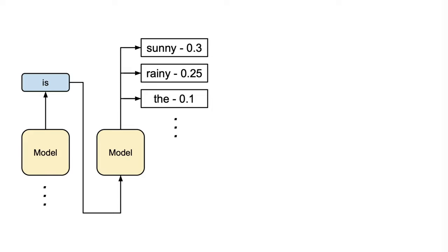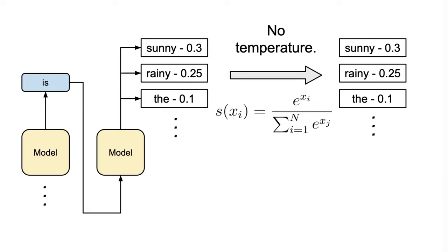Taking the previous sentence, 'Today the weather is,' let's see what may happen when we try to predict the next word. If we leave the softmax function as it was by setting the temperature equal to 1, we would simply sample the next word from the same probability distribution.